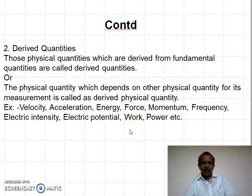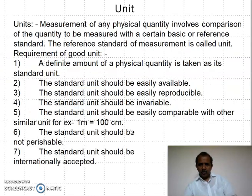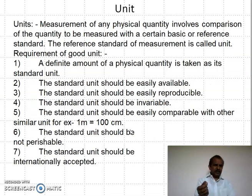The second one is derived physical quantities. Those physical quantities which are derived from fundamental quantities are called derived quantities. Here are many examples: velocity, acceleration, energy, force, momentum, frequency. For example, momentum is mass into velocity. Frequency is one upon period. These physical quantities are derived from fundamental physical quantities. I just showed this slide also.